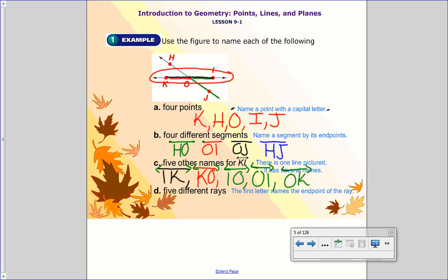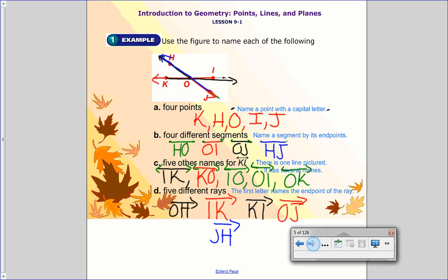So again, line segments, they just look like a line with endpoints. And then finally, D, five different rays. Well, a ray has one endpoint. So I could just start at one here, and I could go ray, and you start with the one you're going at, and then ray OH. So I go through the point H. Then I could do the ray IK. I could also do the ray KI. You notice how it's the same letters, but on this one, they actually talk about different rays, because the arrow goes in a different direction. I could do ray OJ. And finally, if I wanted to, I could do the ray JH. There we go. And again, you list the first letter at the endpoint for that one.